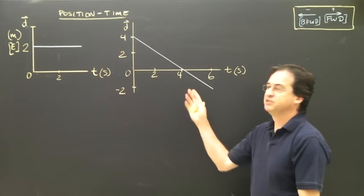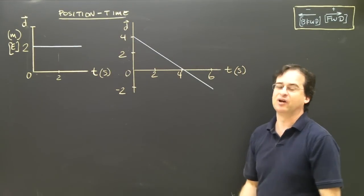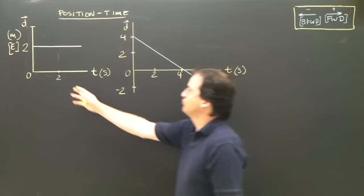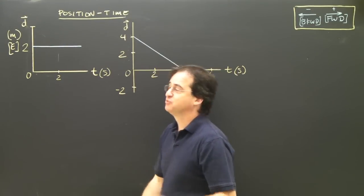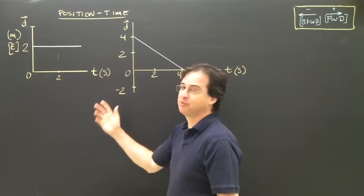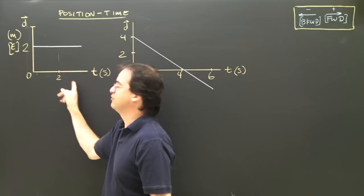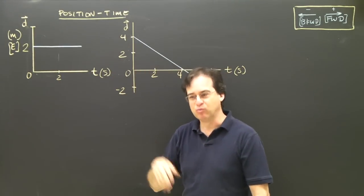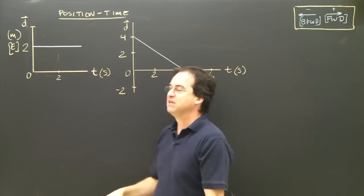Let's look at a couple of different position-time graphs and see if we can figure out what the object is doing. We'll start with this graph. The first question is: what type of graph is it? It's a position-time graph. A position-time graph tells me where I am at any given time.